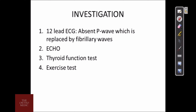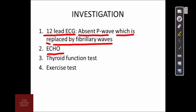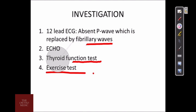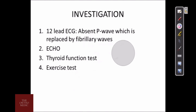Investigations. We do a 12-lead ECG, where we find an absent P wave which is replaced by fibrillary waves. Echocardiography is done, thyroid function test is done, and exercise test is done. These are the main investigations.